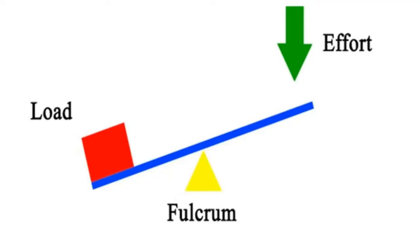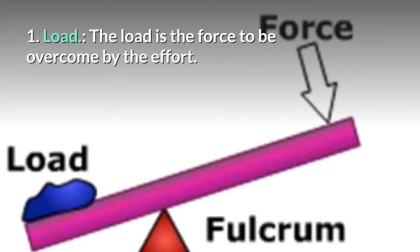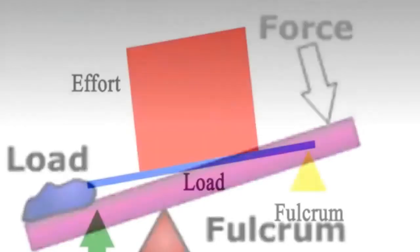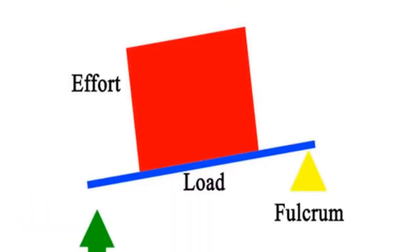A lever has three main parts. These are: load, pivot and effort. The pivot is also known as the fulcrum. Load: The load is the force to be overcome by the effort. It is usually the object which is being moved.